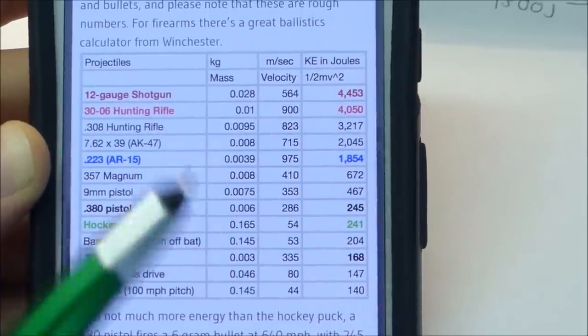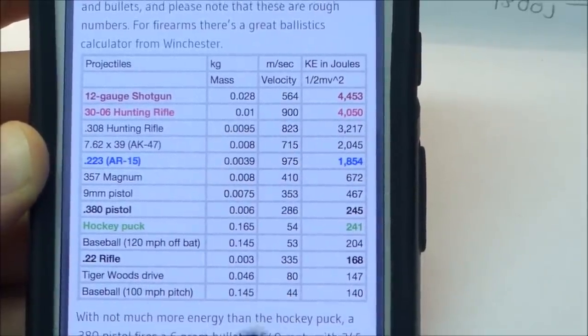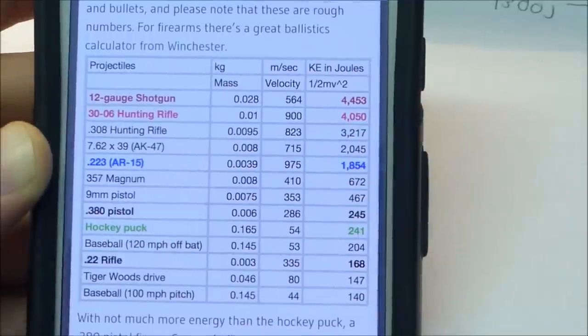To put this into perspective, let's take a look at this pretty cool little chart. So we see we have a baseball that has an energy of 140 joules, which is about the same as this capacitor bank.